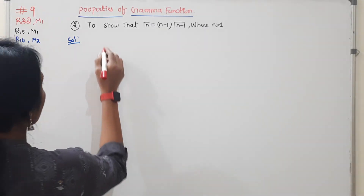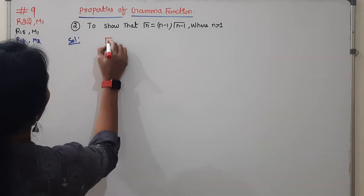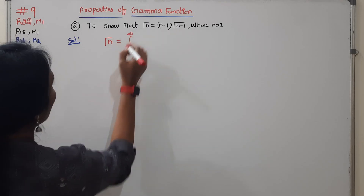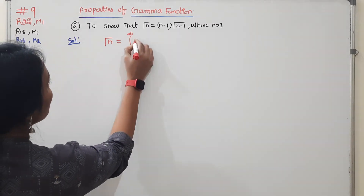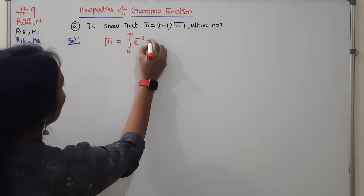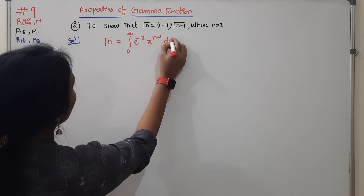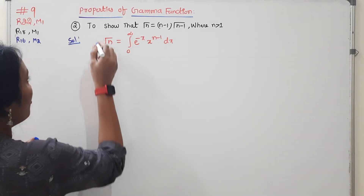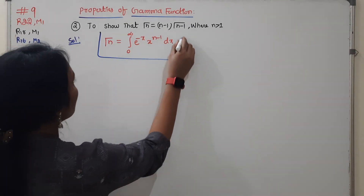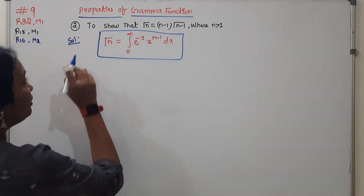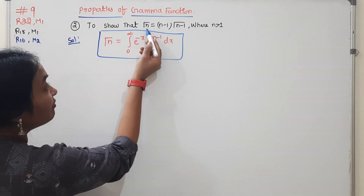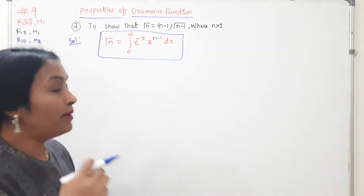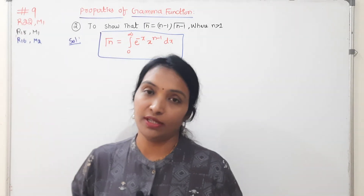Gamma of n is equal to the integral from 0 to infinity of e to the power of minus x, multiplied by x to the power of n minus 1, dx. This is our gamma definition. By using this definition, we need to show that gamma(n) is equal to (n minus 1) into gamma(n minus 1).